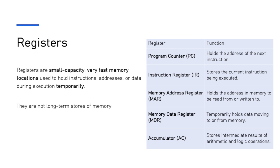So in our example, 1001 — the address in RAM — is stored in the MAR, and the input instruction loaded from RAM going to the instruction register is stored in the MDR; both of these work side by side. Finally, the accumulator is the register used by the arithmetic and logic unit — it stores intermediate results of arithmetic and logic operations. Make sure you are aware of these registers and what they actually do, as they are very important for common exam questions.